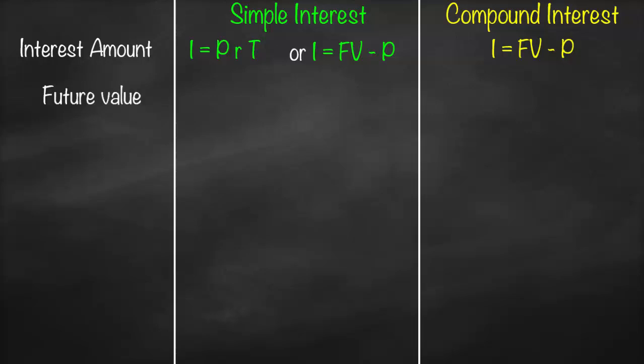For future value, for simple interest it's equal to principal multiplied by open bracket one plus simple interest rate times time close bracket. We can also get future value as principal plus interest.